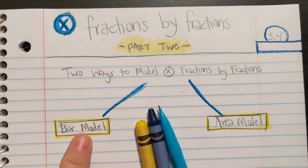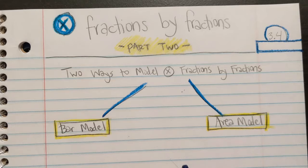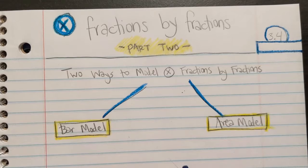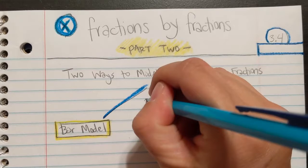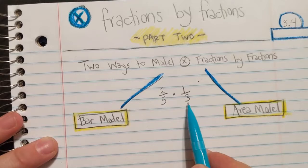So two ways to model multiplying fractions by fractions. We know the bar model and we know the area model. I'm going to put a problem just right here in the middle and we're going to model it both ways. The problem I would like to do is, let's do a pretty basic one. Maybe we will do two fifths times one third. That's the problem. We're going to do it using the bar model. You ready?